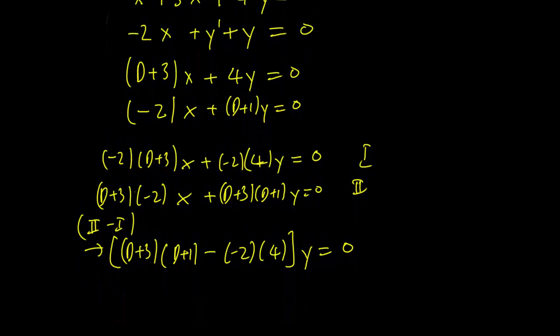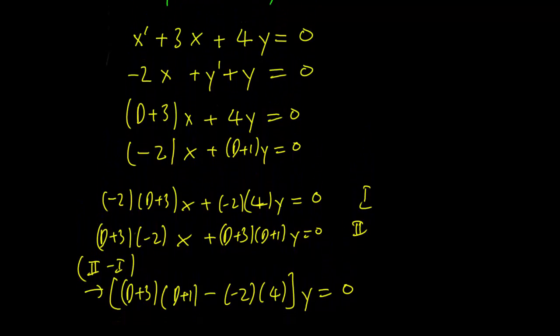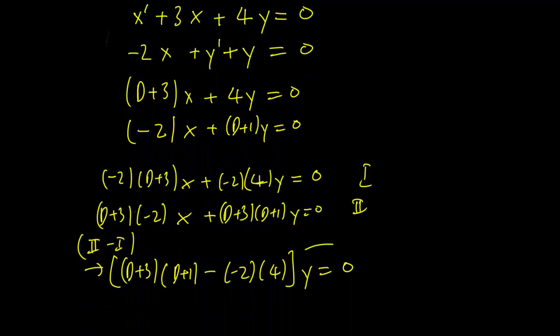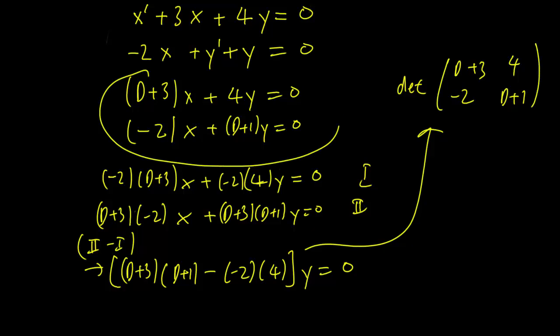Now here's one thing to notice: this expression here by the y is going to be equal to the determinant of the matrix D plus 3, D plus 1, 4, minus 2, which is the matrix we get from this system.